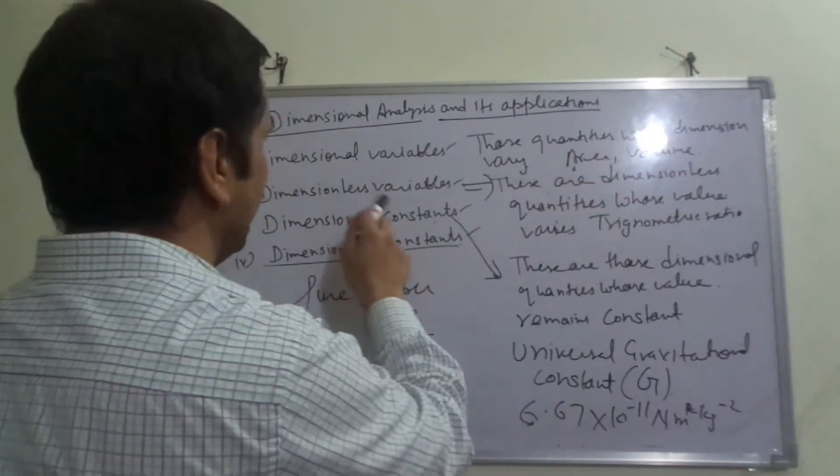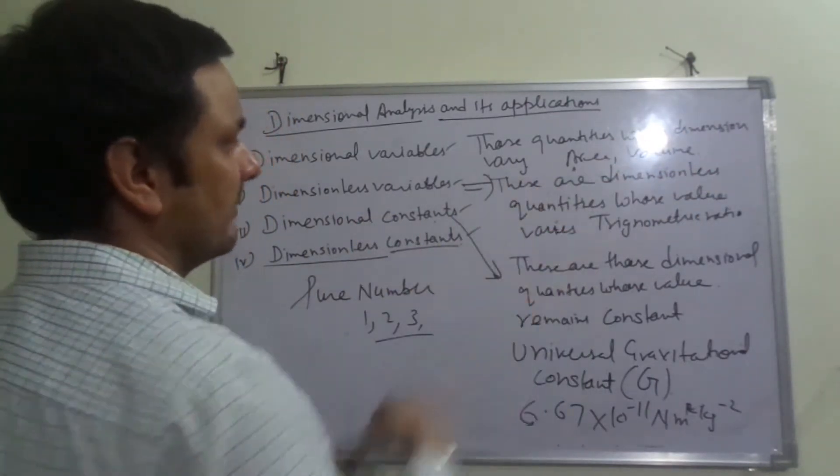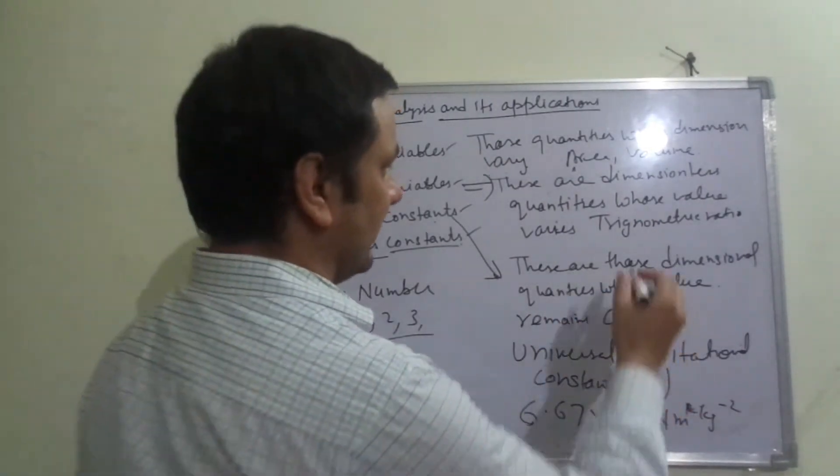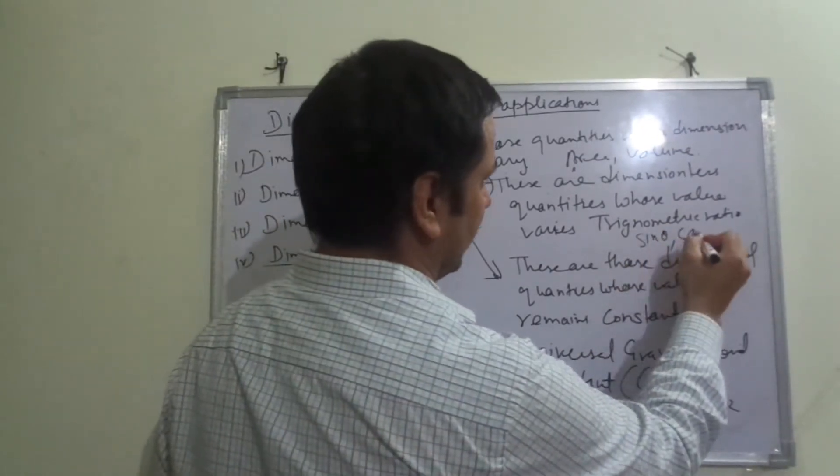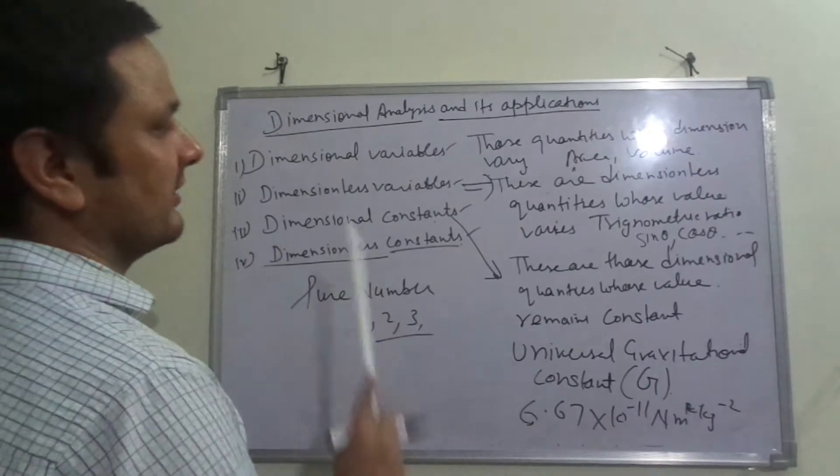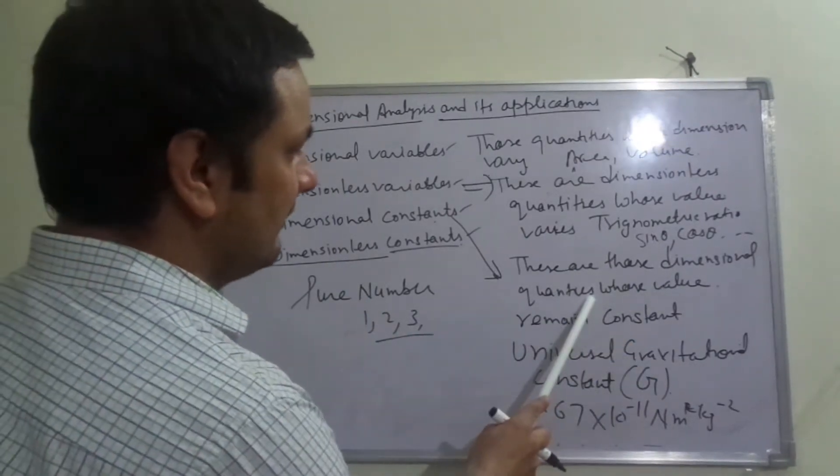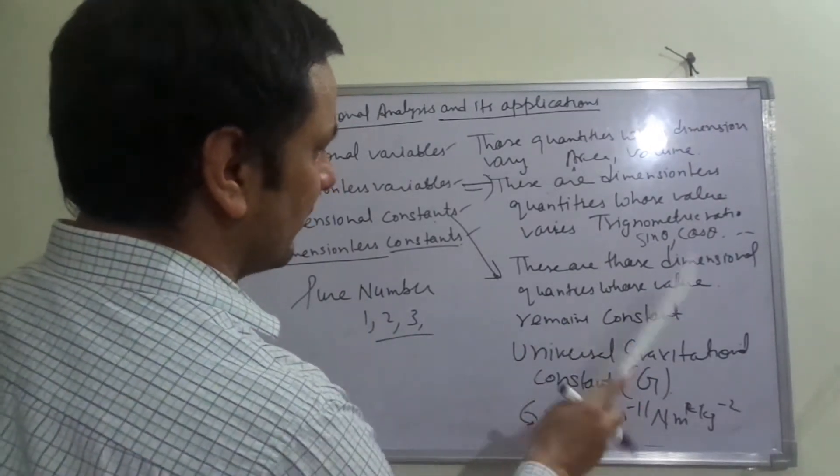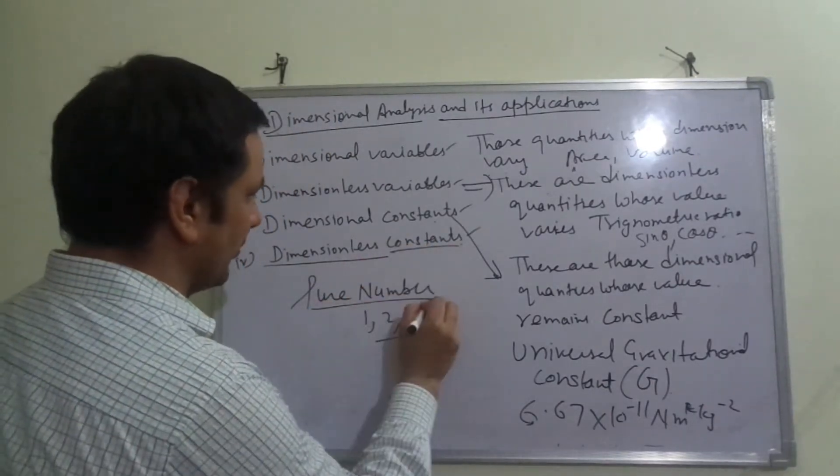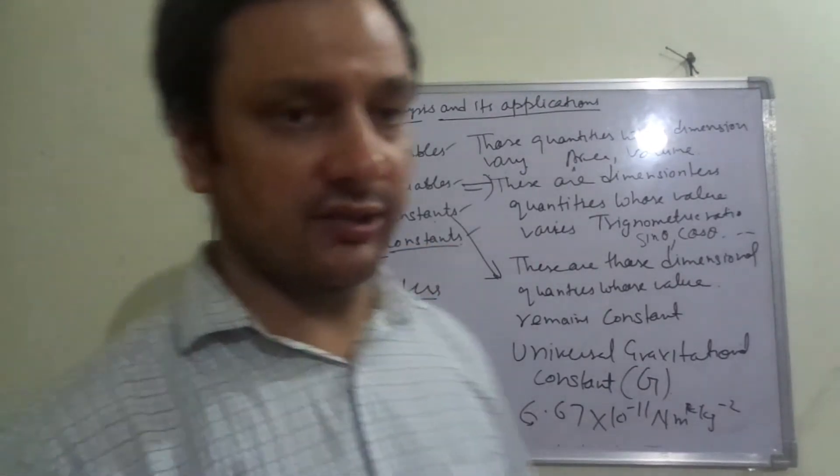There is trigonometric ratio: sin theta, cos theta, tangent theta and so on. Now dimensional constants - these are those dimensional quantities whose value remain constant. Then comes dimensionless constant, that is your pure numbers: 1, 2, 3, etc.